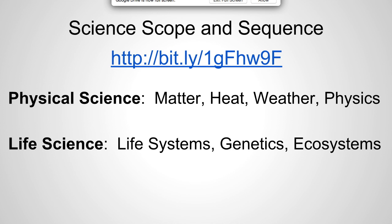This is my scope and sequence — there is a bit.ly for it. I do properties of matter first because it's a foundational skill. Then energy is the second unit so that you are heating and cooling those states of matter so you can apply it. With heating and cooling such as convection, that goes straight into weather and physics because you're expanding, contracting, lifting, and moving by air pressure. So I thought keeping the physical science together was a great idea.